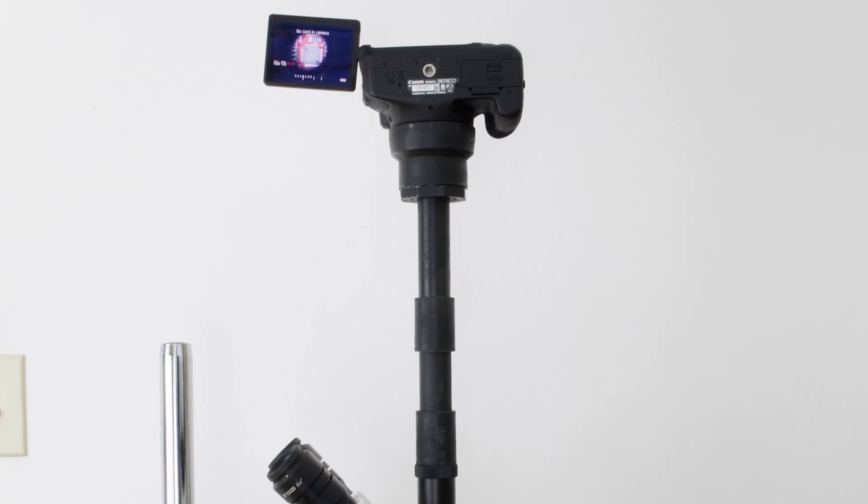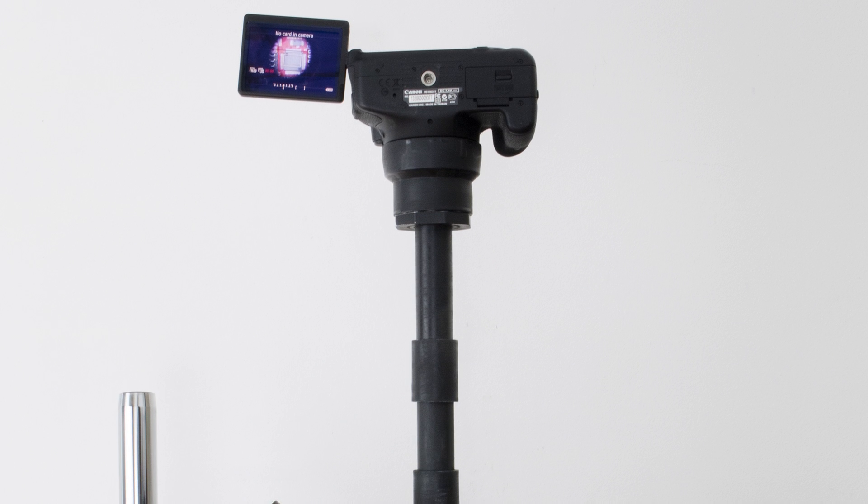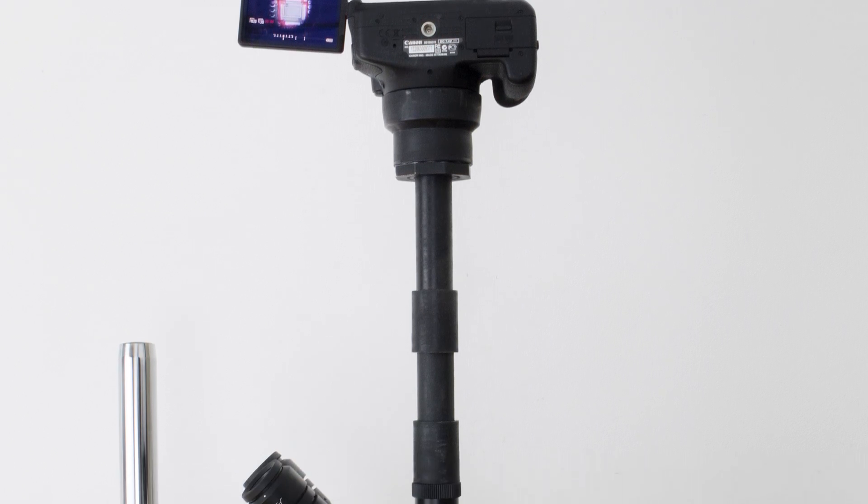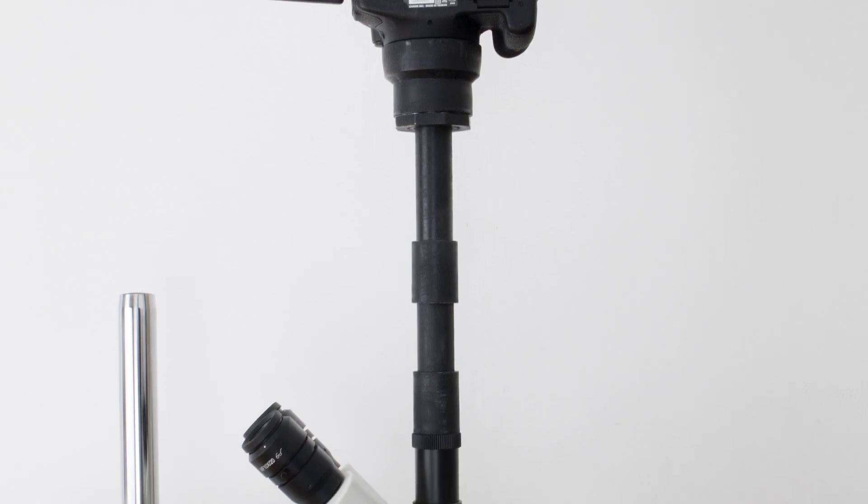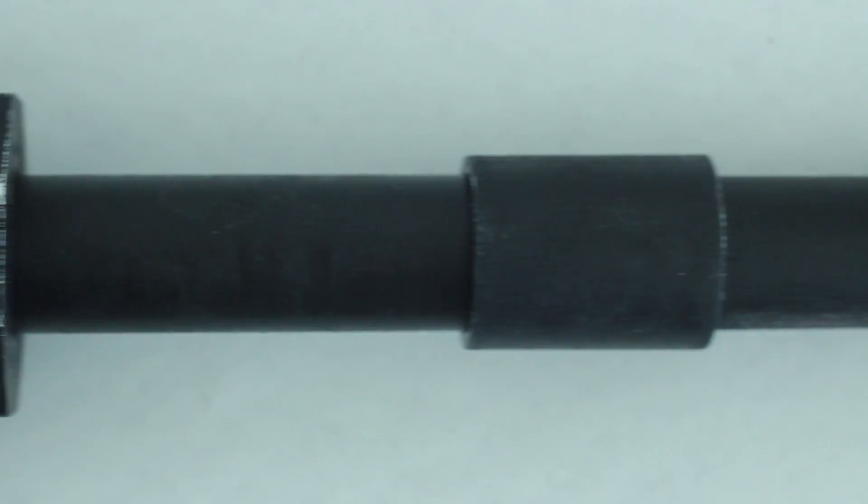While this is specific to my microscope, an Amscope SM3 NTP, the techniques and principles covered in this video could be applied to other models of microscopes. You could even use it to build a primitive lens for your camera. Is it worth it to build one? Why don't you decide?